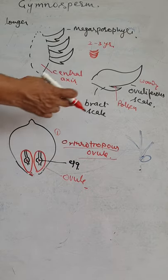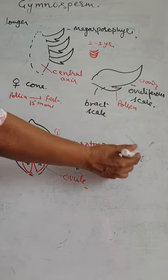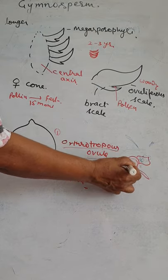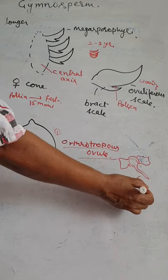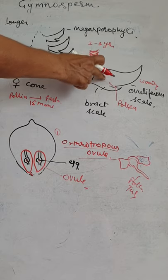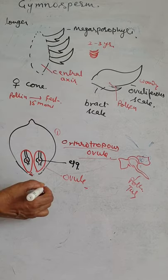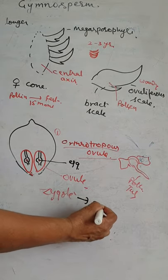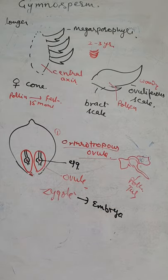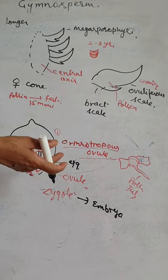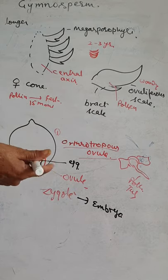The pollen grains come to the female cone. The intine elongates to form the pollen tube, which enters the female cone. Fertilization then takes place — the fusion of male and female gametes forms the zygote.